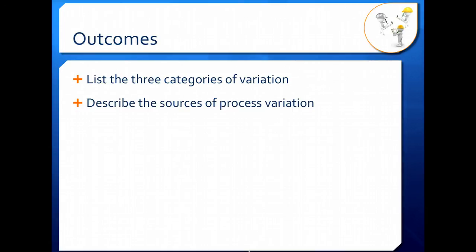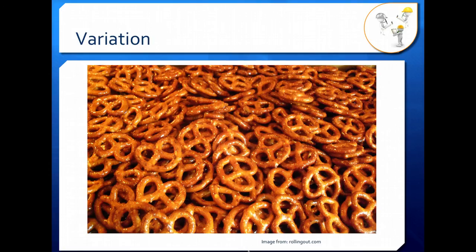Thinking about variation in a process, take a look at these pretzels. They look very similar, but if you look closely, you can see differences between every single pretzel. They may have slightly different weights, colors, amounts of salt, or hardnesses. It's impossible to manufacture any two products exactly alike.